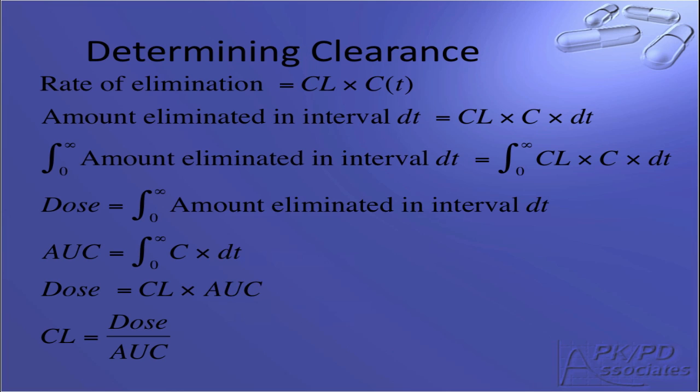To calculate the clearance of a drug, we utilize the drug concentration information, starting with the base equation: rate of elimination equals clearance times concentration. If we consider a small time interval, dt, we can calculate the amount eliminated in that interval. Then, to calculate the total amount eliminated, we integrate from zero to infinity. The total amount eliminated is equivalent to the dose, and the integration of the concentration from zero to infinity is the area under the curve. That gives the equation: dose equals clearance times AUC. Rearranging this, we can calculate clearance by dividing the dose by the area under the curve.